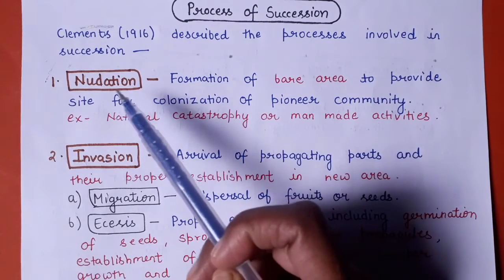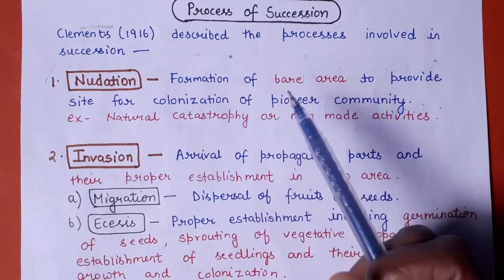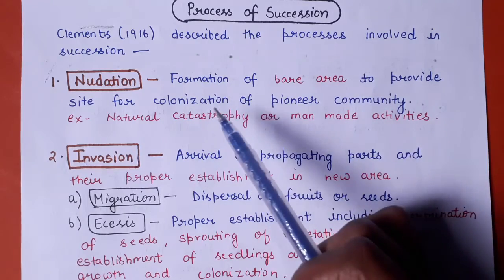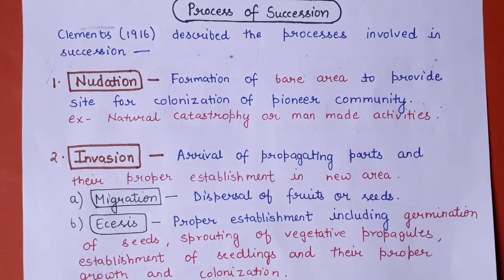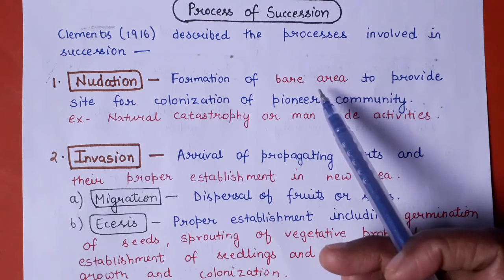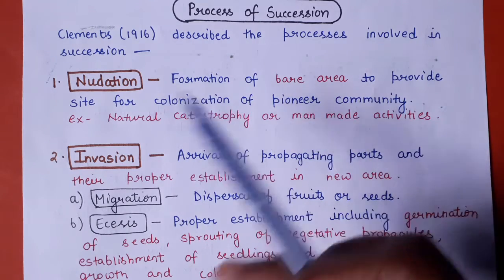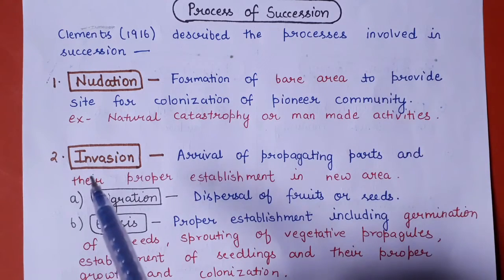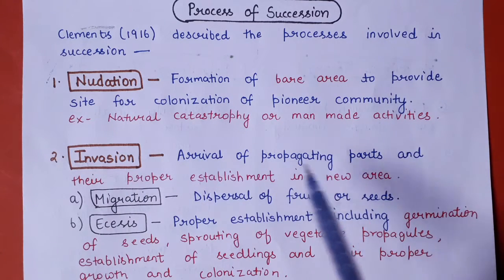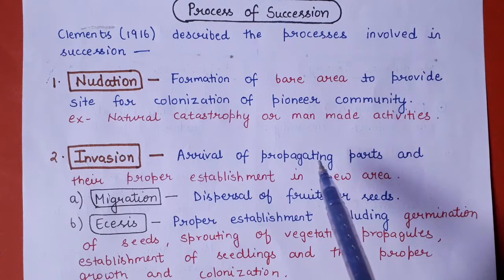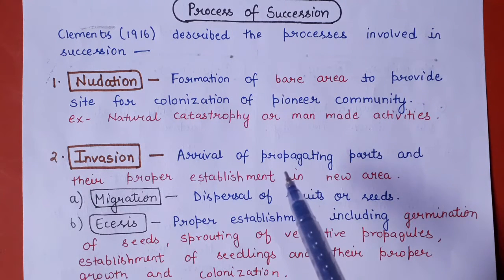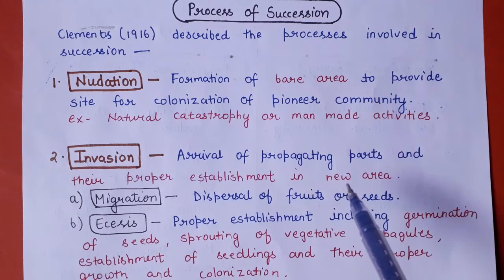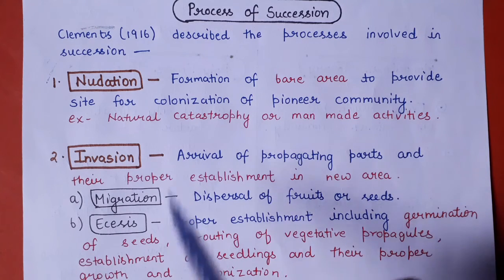The first step is nudation, which involves the formation of a bare area to provide a site for colonization of the pioneer community. It is essential that there must be a bare area on which a pioneer community can colonize. The second step is invasion, which involves the arrival of propagating parts like seeds of different plants from the surrounding area into the bare area. The process of invasion involves three sub-steps.